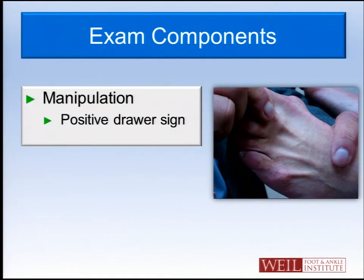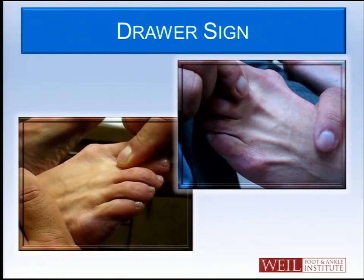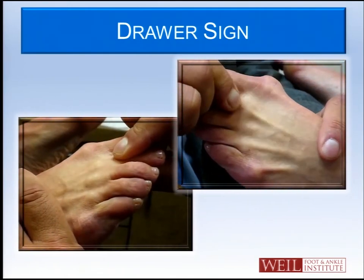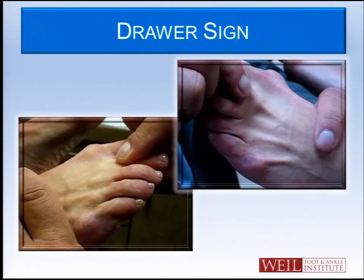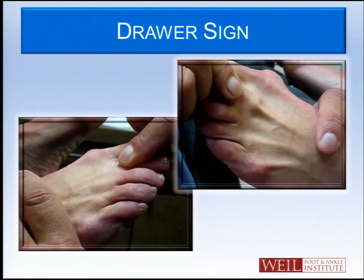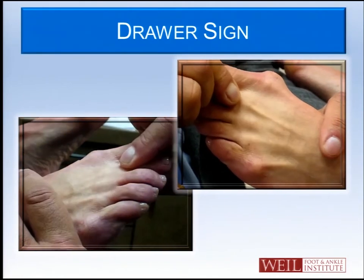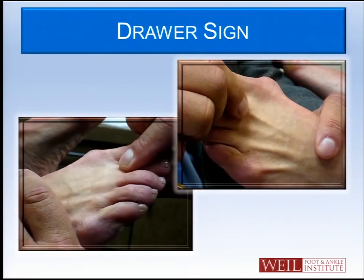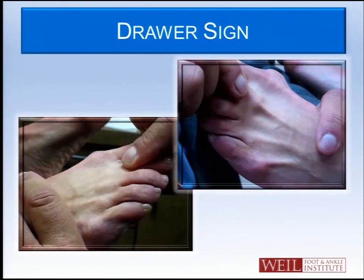The most classic way to define whether you have a plantar plate problem is through the drawer maneuver. In the bottom left, you're seeing a normal drawer on this patient, and on the upper right of their left foot, this is an abnormal drawer — it's unstable. There are several things you're trying to identify with this test. Number one is gross instability, which you can see in this video. However, you're also looking for pain. One foot may have a little more instability than the other, but it may have much more pain, so be appreciative of how much pain there is when you do this test.